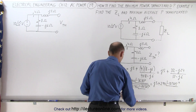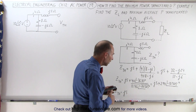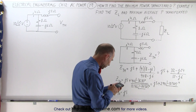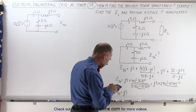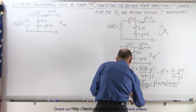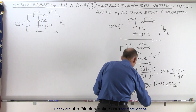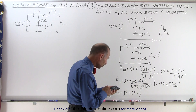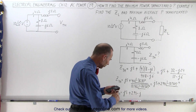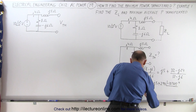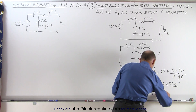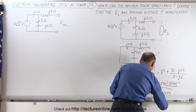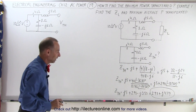That gives us minus 10.305 degrees. Now we have to convert back to the real and imaginary part. Z_Thévenin equals J5 plus: take the cosine of 10.305 and multiply times 2.98, that gives us 2.93, so plus 2.93. Then take the sine of 10.305 and multiply times 2.98, which equals 0.53, so minus j0.53. That gives us 2.93 plus j4.47 — and so here we have the Thévenin impedance of our circuit.